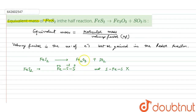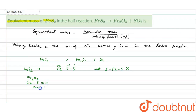Now we will see the oxidation state of Fe in Fe₂O₃. Let the oxidation state of Fe be x, so it will be 2x. For one oxygen atom the oxidation state is minus two, so for three oxygen atoms it will be minus six. Therefore, the oxidation state of Fe is plus three.